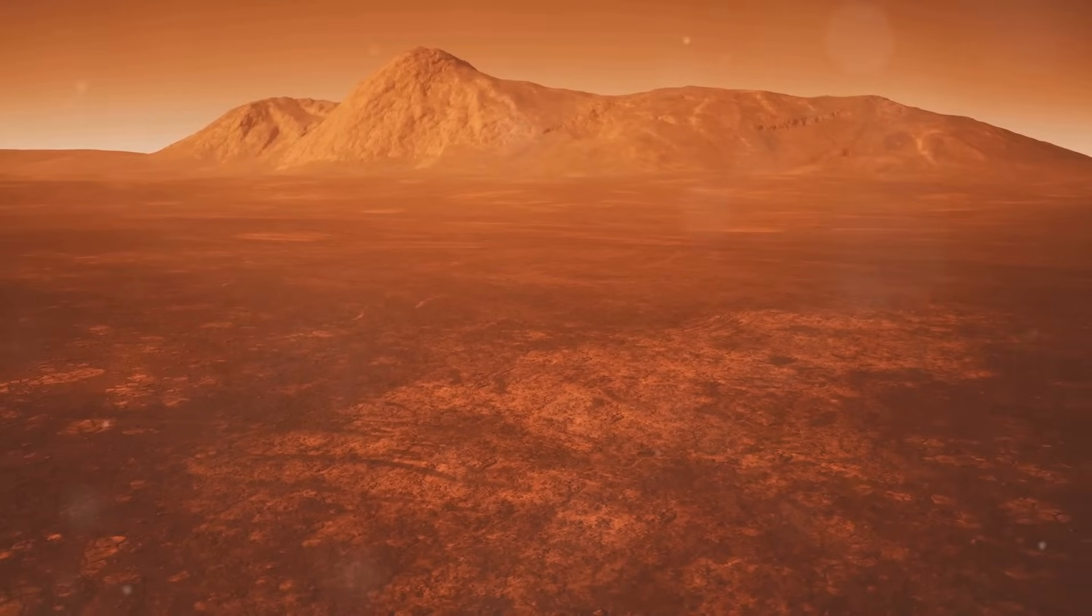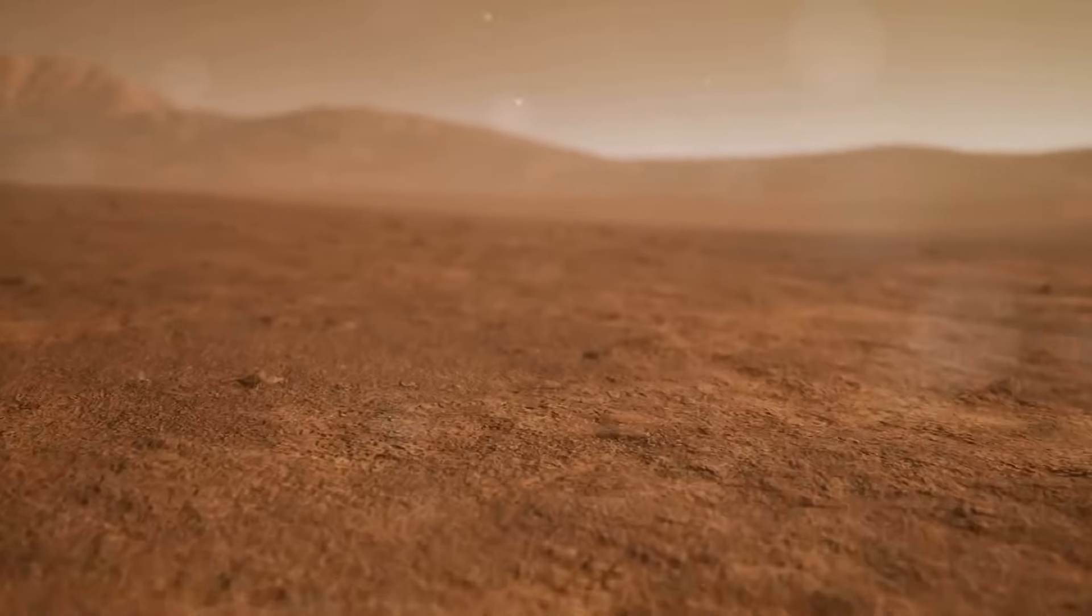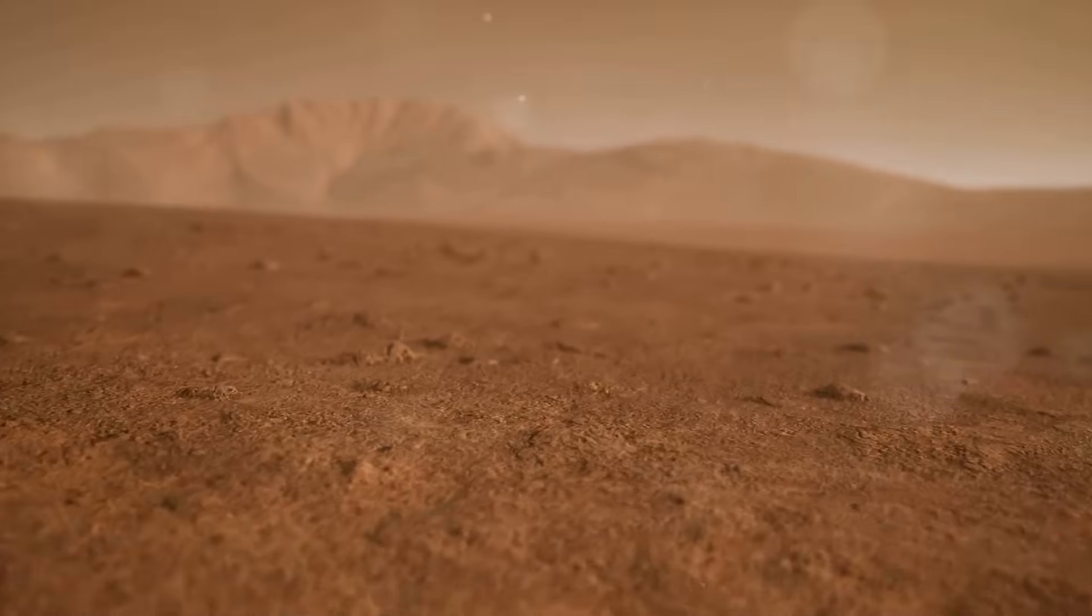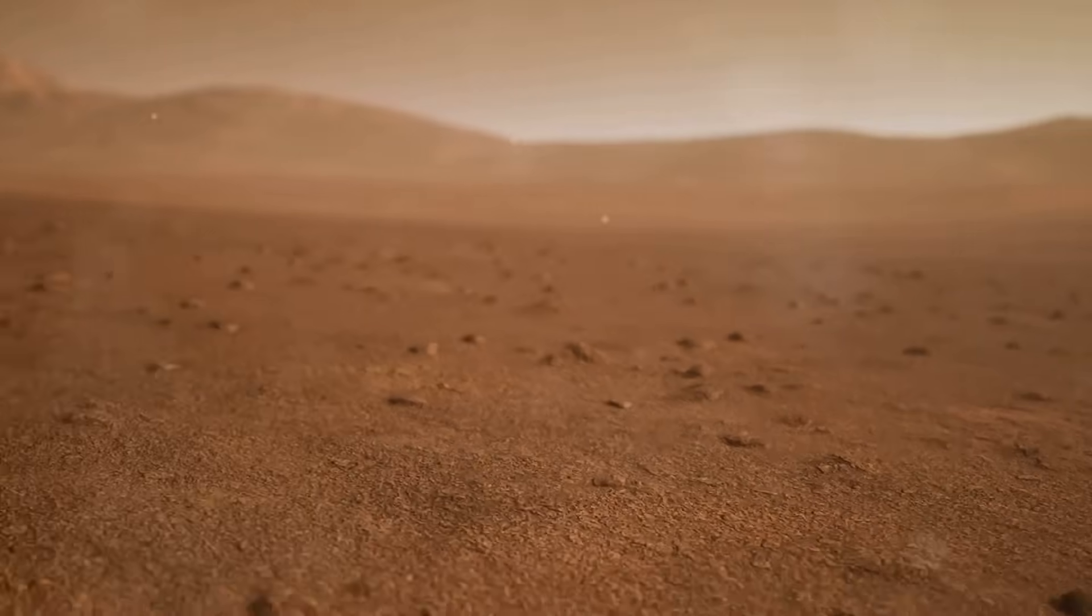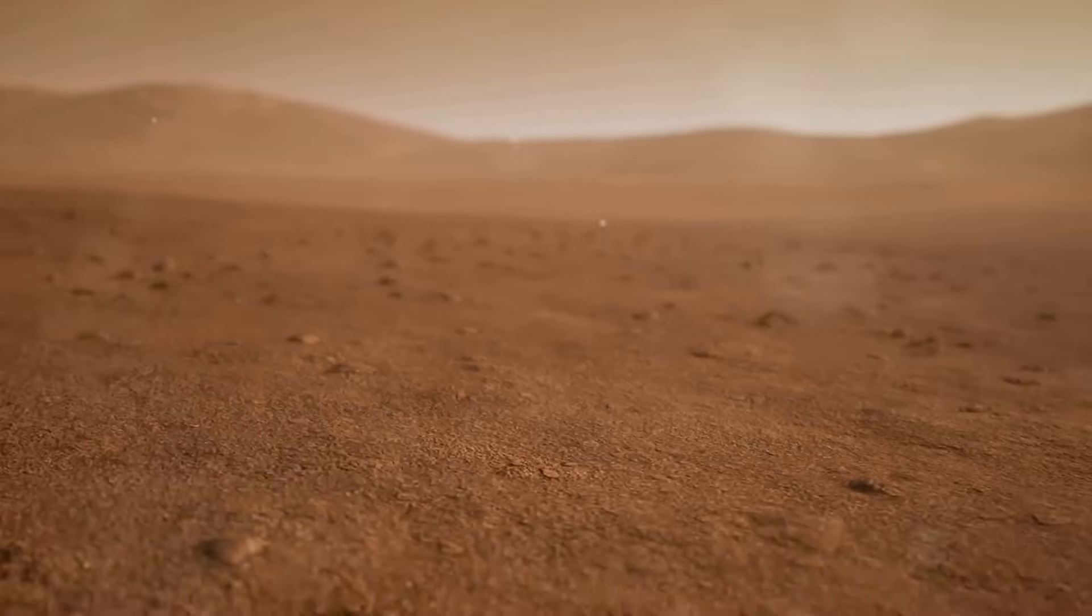Or too cold, like Mars, where the frigid temperatures and thin atmosphere create a barren, inhospitable landscape. Mars, often called the Red Planet, is a frozen desert, devoid of the liquid water and warmth necessary to sustain life.